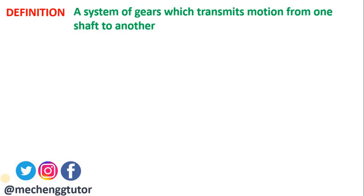A gear train is defined as a system of gears which transmits motion from one shaft to another shaft. If there are two or more shafts and you want to transmit motion from the first shaft to the fourth shaft with intermediate shafts, we use gears on each shaft — that arrangement is called a gear train. The best example is an automobile gearbox, where different gears are mounted on shafts and based on which gears you engage, you get a particular speed. A five-speed gearbox has five different combinations of gears.